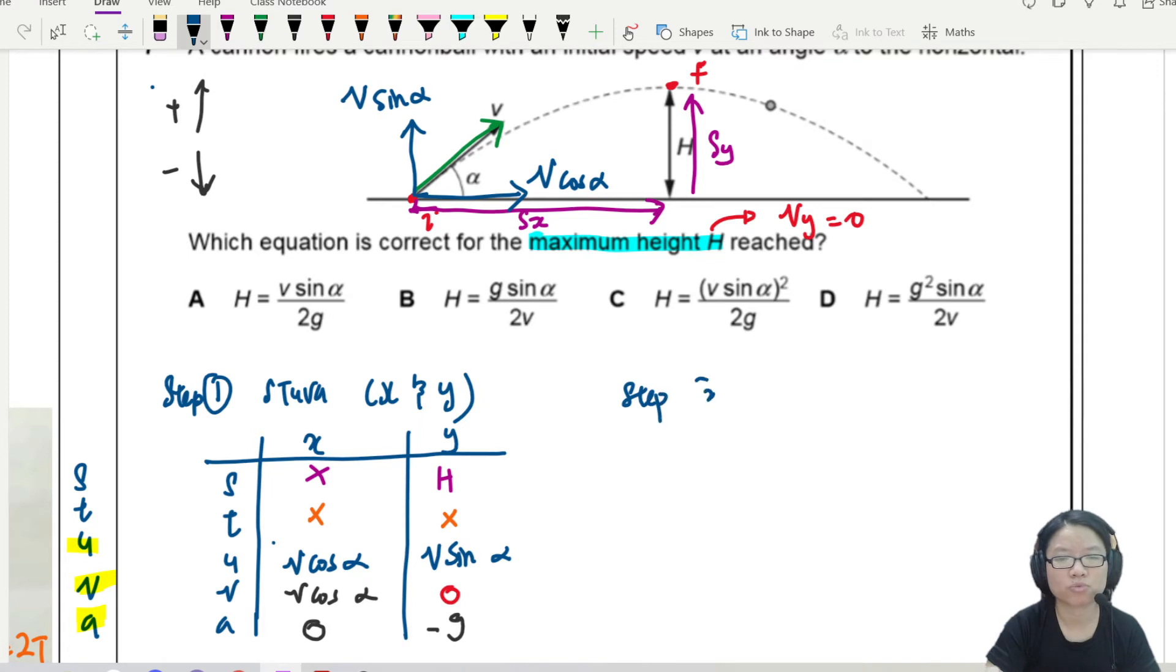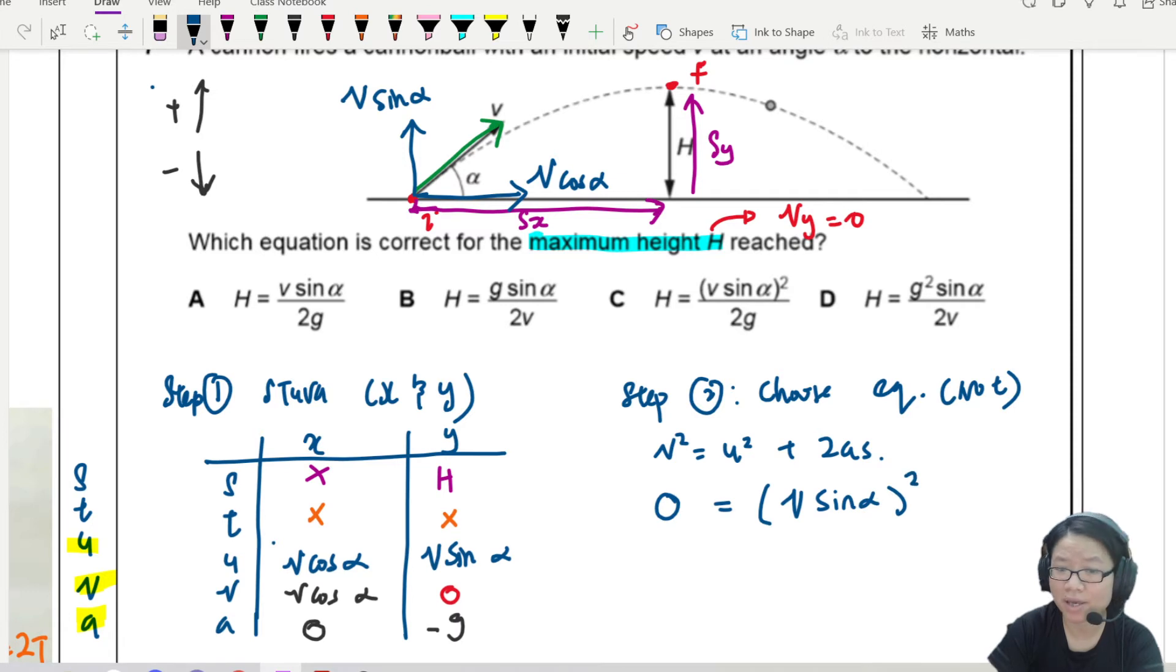Step 2. Choose the equation. Now I have no t. So no t means I will use v² = u² + 2as. This is 0, my favorite number. u² is (v sin α)². Class, don't panic. 2. This is negative g. And then, s is h.